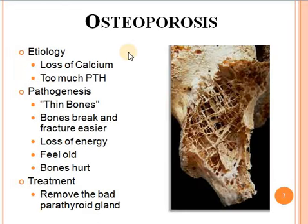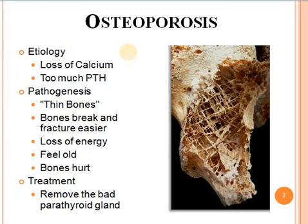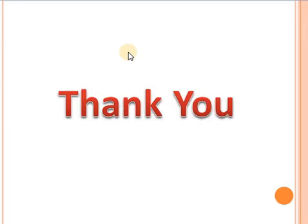Now we will discuss osteoporosis. Osteoporosis is a disease that may be caused due to hyperparathyroidism. Etiology: loss of calcium from the bones due to higher production of parathormone may cause osteoporosis. Pathogenesis: in osteoporosis, bones become very thin, break and fracture more easily compared to normal, causing loss of energy, and bones hurt very easily. Treatment: if osteoporosis is due to the hyperproduction of parathormone, it may be treated by removing the affected parathyroid gland or parathyroid tumor responsible for the higher production of parathormone.